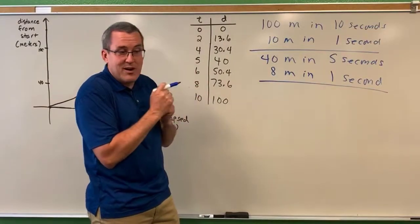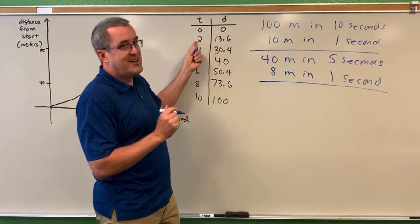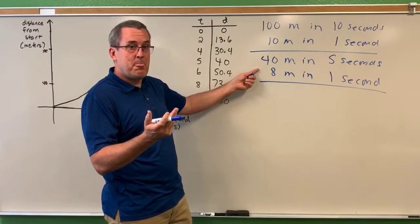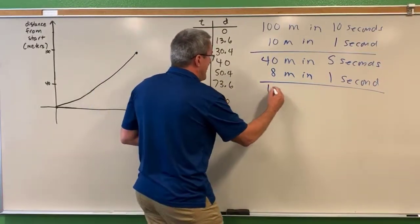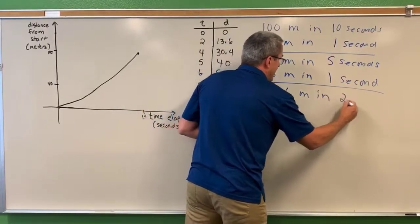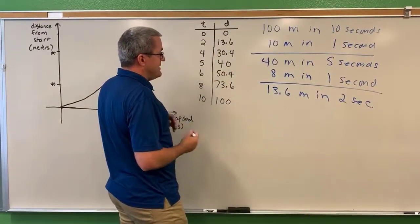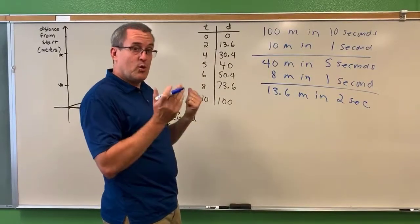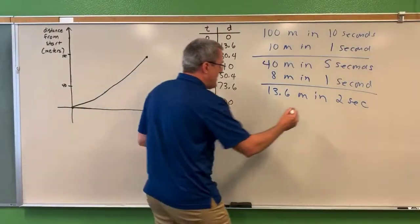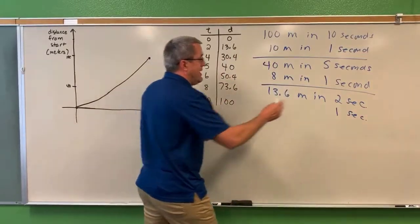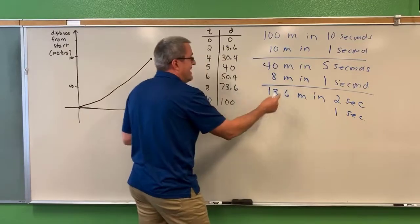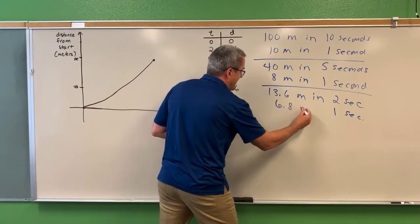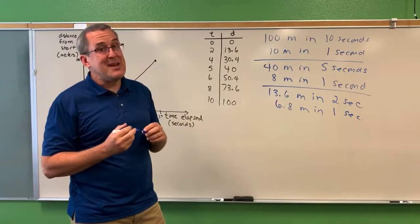Suppose we narrow in even more and look at the first two seconds. Do you think he was running faster than 10 or eight meters per second, or slower? In the first two seconds he ran 13.6 meters — that's 13.6 meters per two seconds. Converting to a one-second interval: in half the time he runs half the distance, and half of 13.6 is 6.8. So in the first two seconds, he's running 6.8 meters per second.